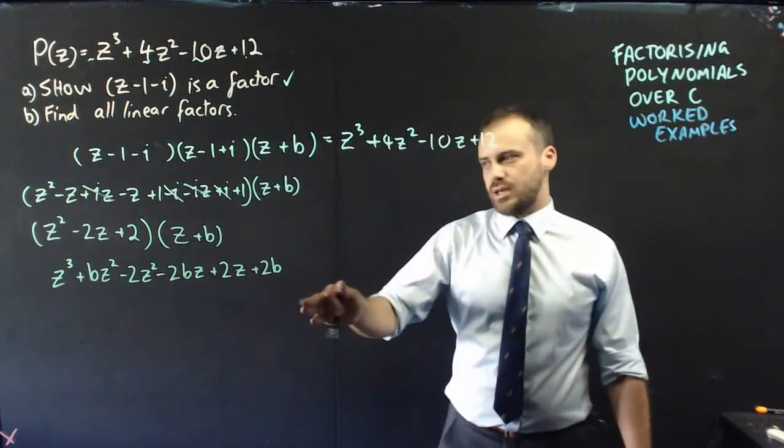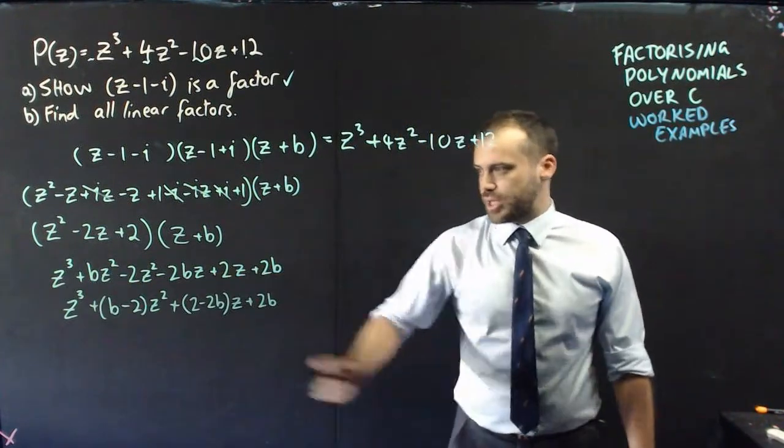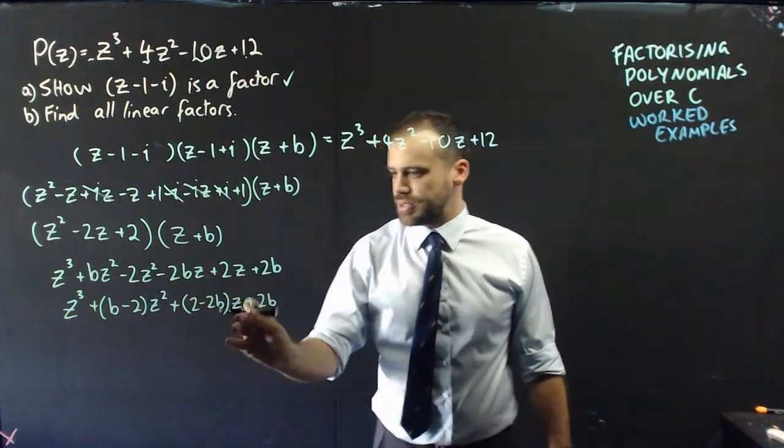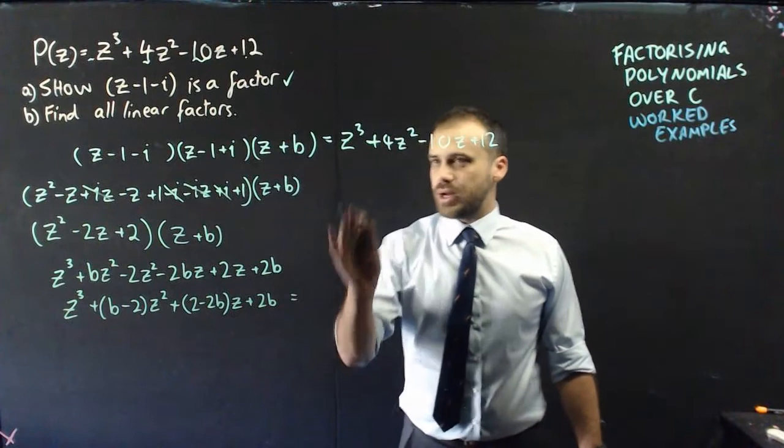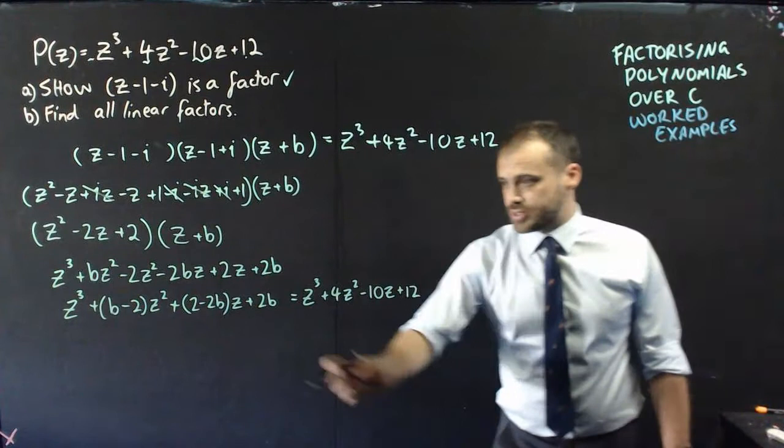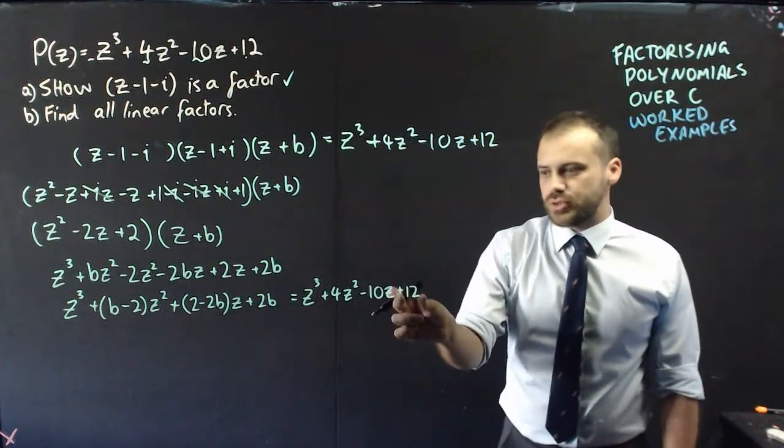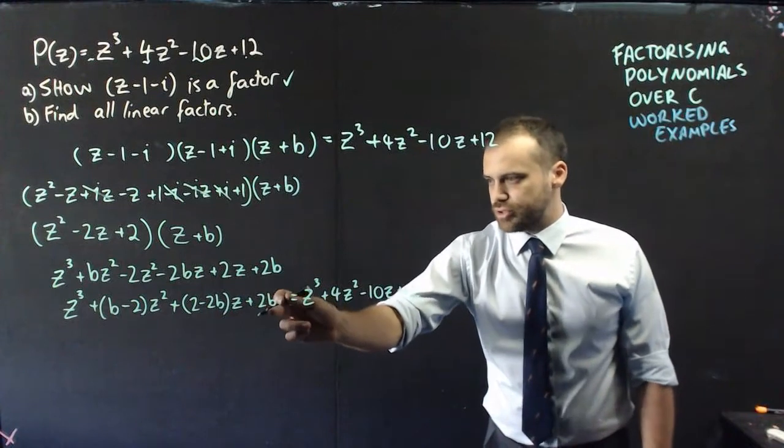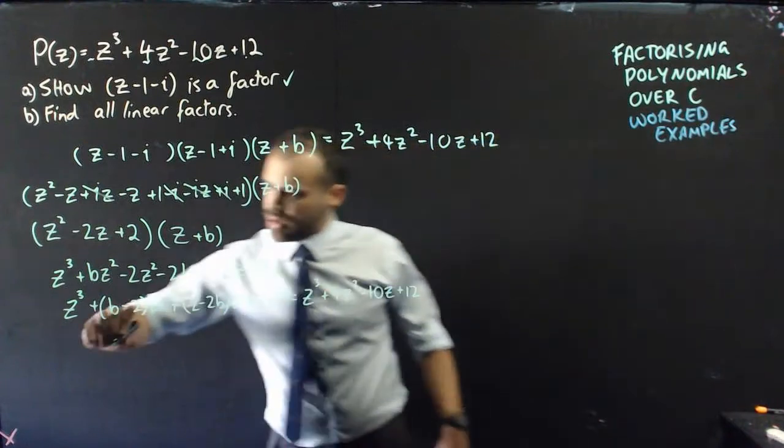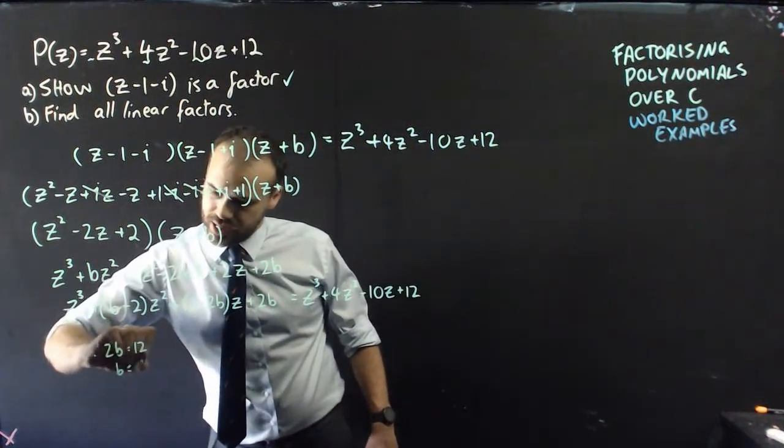Now, when I expand that, I get this thing here, and obviously I can group some terms here a little bit. So, here's where the magic happens. Now that I have it as z cubed plus something z squared plus something z plus 2b, remember that this was initially equal to all of this. And if that's true, it isn't hard to see that this bit, 2b, must be equal to this bit, because b is a real number, and 2 times the real number. All the other ones are going to be z, z, z. All right. So, I can say, therefore, 2b equals 12, and b equals 6.